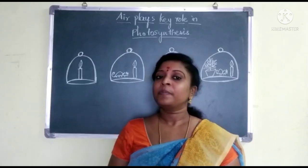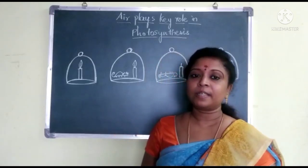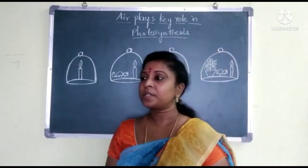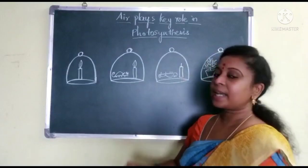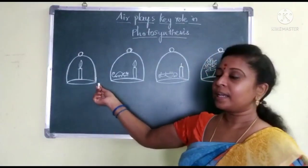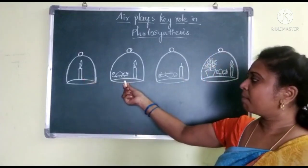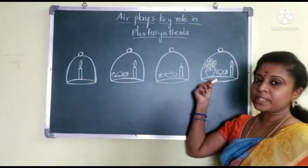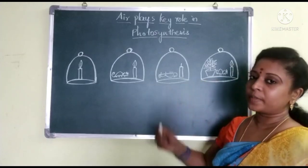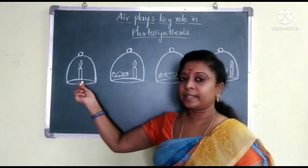Here we are going to learn about one activity which was performed by Joseph Priestley. To perform this activity, we need some apparatus: a bell jar, a candle, a mouse, and a mint plant. We have to take these four things to perform this activity.